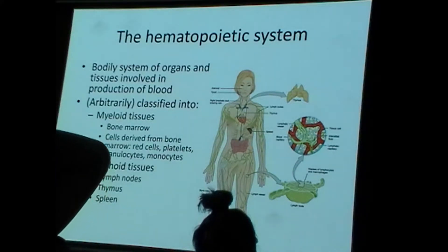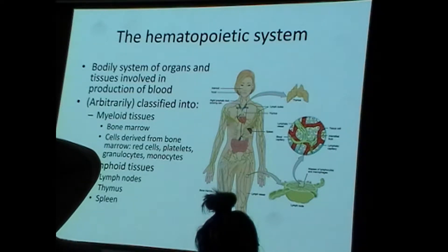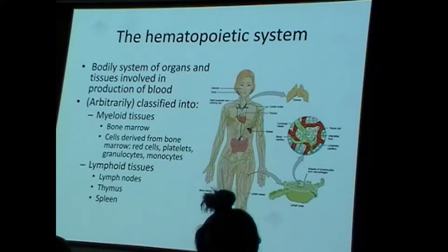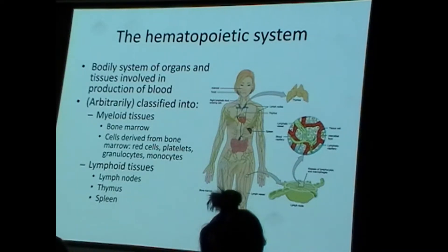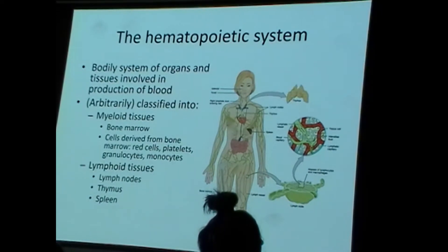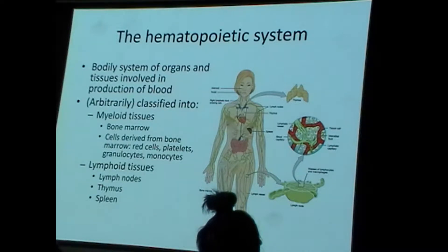This classification is somewhat arbitrary. Lymphocytes can be associated with both myeloid and lymphoid tissues — T cells, for example, originate in the bone marrow. It's something of an arbitrary classification, but it's helpful for understanding certain disease states. When we get to cancer of white blood cells, we'll break them down into myeloid neoplasms and lymphoid neoplasms.